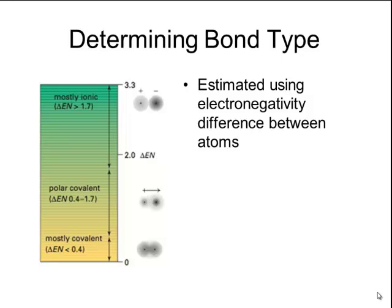If something has a difference of 3.3, we consider it 100% ionic. As that percentage of ionic character becomes less, then we classify the bond as covalent.